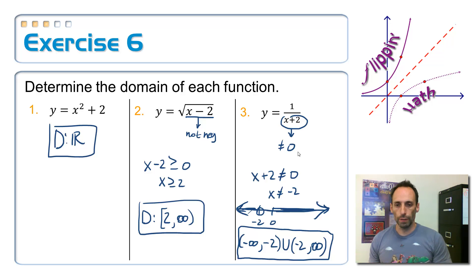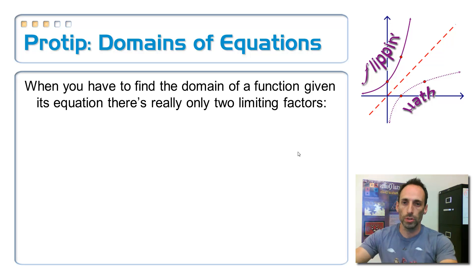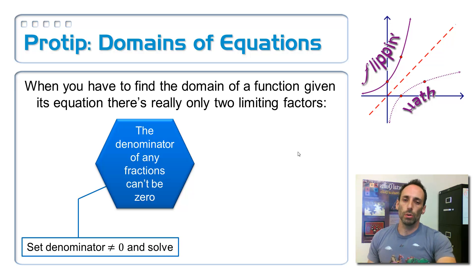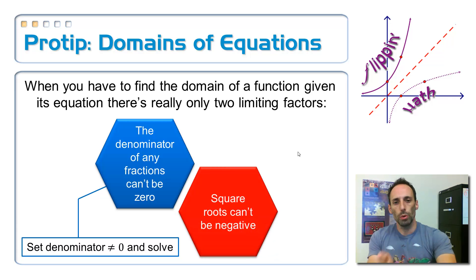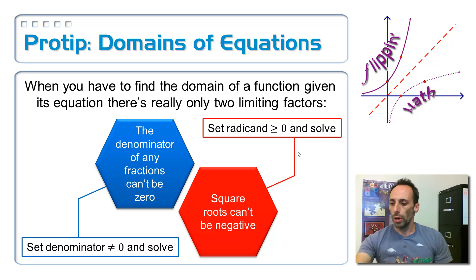Let me summarize that in a nice visual pro tip for finding the domain when given any equation. There are essentially two things that limit the domain — that make it so it's not all real numbers. First, the denominator of any fraction can't be 0. So you set the denominator not equal to 0 and solve — those are the numbers you have to take out. The other one involves square roots: square roots can't be negative. Set the radicand — the stuff underneath the square root symbol — greater than or equal to 0 and solve. Those are the two cases that limit your domain whenever you have an equation.